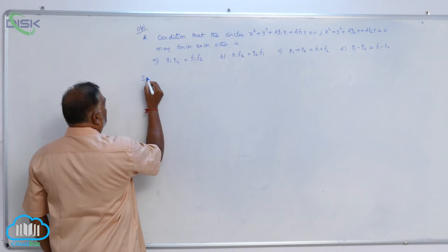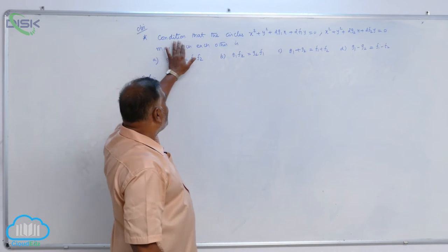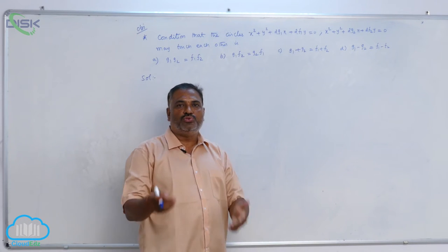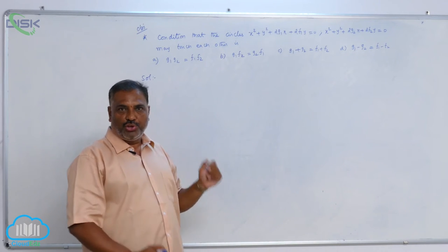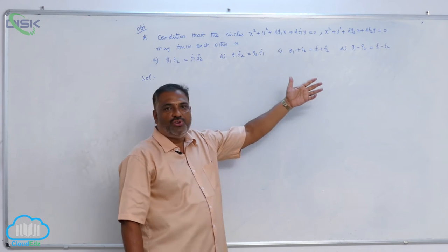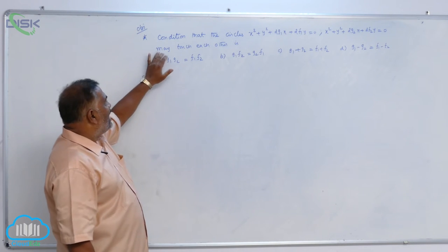One more problem on circles. The condition that the two circles x square plus y square plus 2g1x plus 2f1y equal to 0, x square plus y square plus 2g2x plus 2f2y equal to 0 may touch each other.